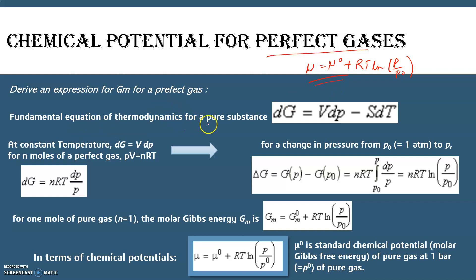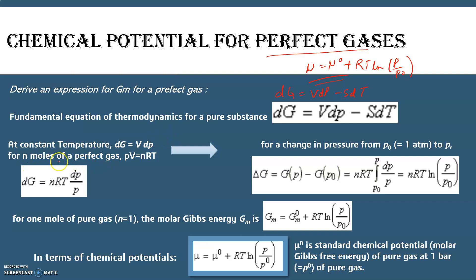We already know the fundamental equation of thermodynamics for a pure substance: dG = VdP − SdT for a closed system. At constant temperature, dG = VdP, because the SdT term vanishes. For n moles of gas we also know PV = nRT for a perfect gas.